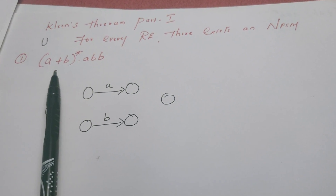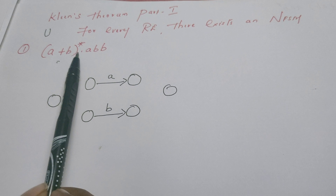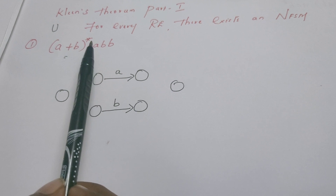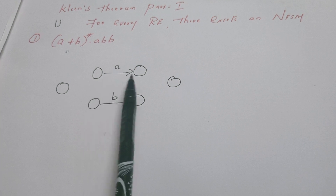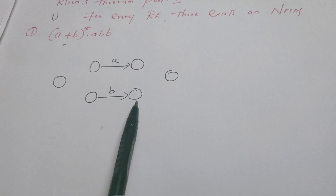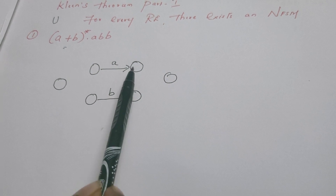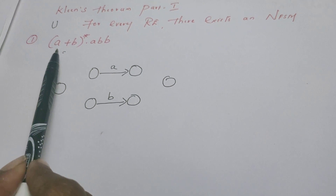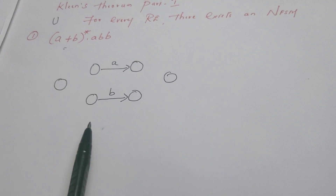So this is the given regular expression: (a+b)* · a · b · b, where + represents the union operator and dot represents the concatenation operator. First I have drawn the NFSM for the regular expression a, then I have drawn the NFSM for b. Now I am going to convert these two machines into a single machine which recognizes the regular expression a union b.